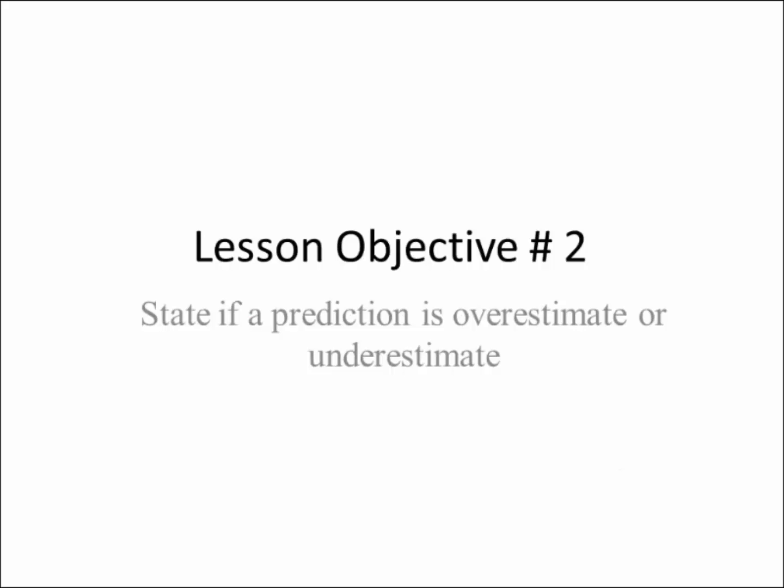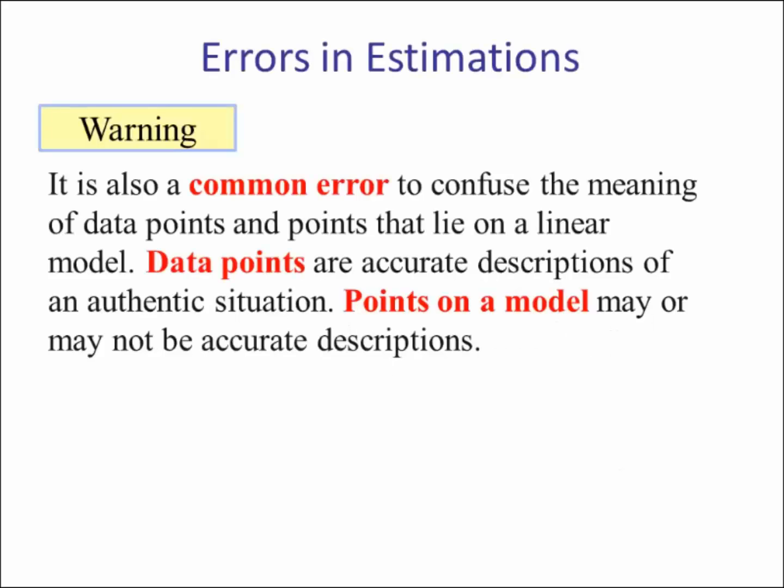Lesson objective number two. It is also a common error to confuse the meaning of data points and the points that lie on the linear model. Data points are accurate descriptions of an authentic situation. Points on the model may or may not be accurate descriptions.